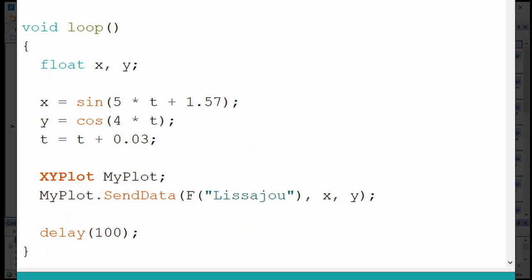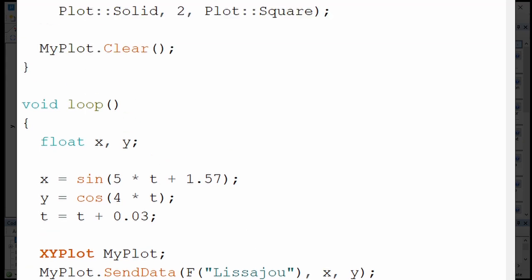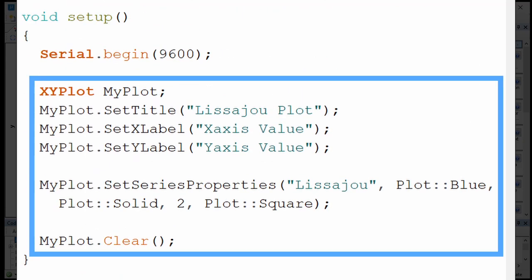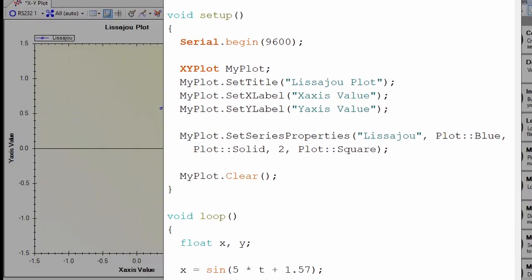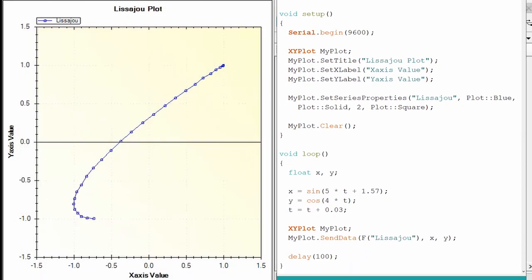Sending data from your Arduino sketch works like the time plot, but this time use an XY plot variable, and include both X and Y values when you call sendData. Plot commands for setting styles and labels are just the same. Here I've created a nice Lissajous pattern from trig functions, but you can send any numeric data to MagunoLink plots.